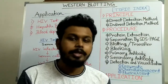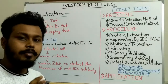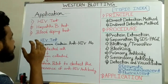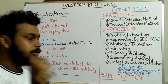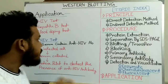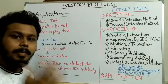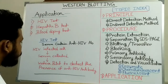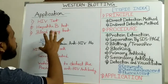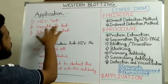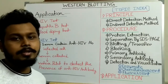Western blotting has several important applications. It is used for HIV testing — the western blot is performed to determine whether the serum of a potentially infected individual contains anti-HIV antibodies. If anti-HIV antibodies are present in the serum, we can conclude that the person is HIV infected. Western blotting is also used for hepatitis B testing and blood doping tests. Thank you for watching this video.